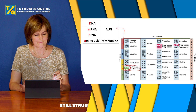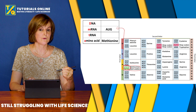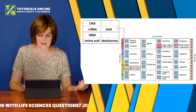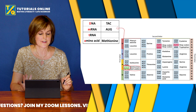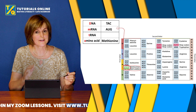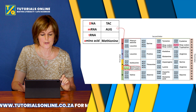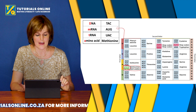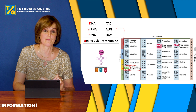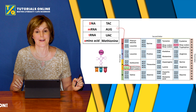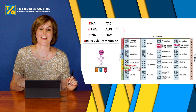Working out the DNA from mRNA AUG: A→T, U→A, G→C, so the DNA is TAC. For the tRNA anti-codon: remember adenine pairs with uracil, not thymine — so it's UAC, not TAC. The methionine amino acid sits on top of the tRNA, being brought to the ribosome to form a polypeptide chain. I hope that's helped you and that you can apply it in your exams and tests.